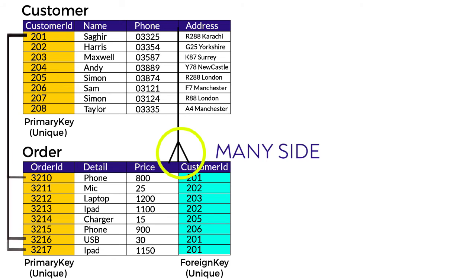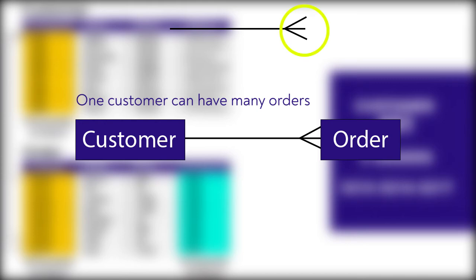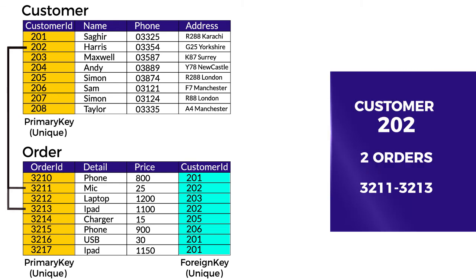The tables are now linked by the foreign key, which is the primary key of the customer table. For example, if we need to know how many orders were made by customer 201, we look at the order table and find order numbers 3210, 3216, and 3217 — so three orders were made by customer 201. Conversely, we can find the customer details for any order. Customer is the one side and order is the many side — one customer can have many orders, but one order cannot be made by many customers. For instance, customer 202 has two orders.